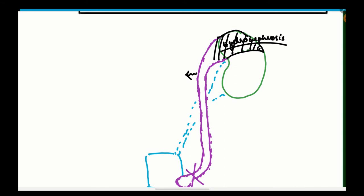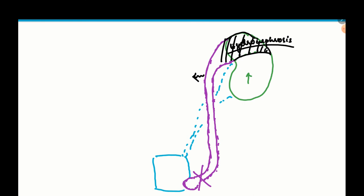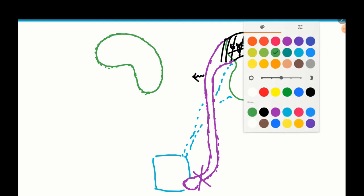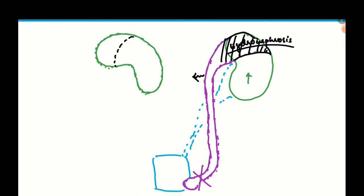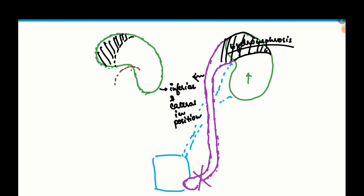Since the superior pole alone has become hydronephrotic, it becomes heavy and droops down — had the entire kidney become hydronephrotic, this would not have happened. As a result, the inferior pole, which was previously in its normal position, now becomes inferior and lateral. The ureter draining the inferior pole is also pulled out of its normal alignment.